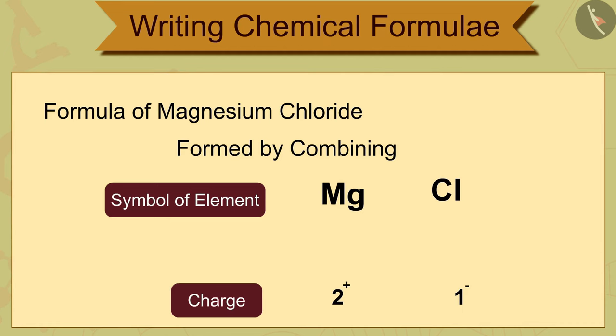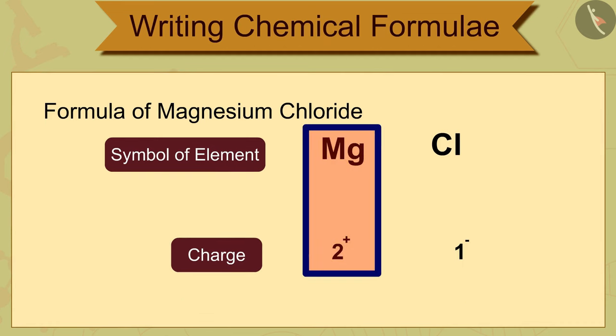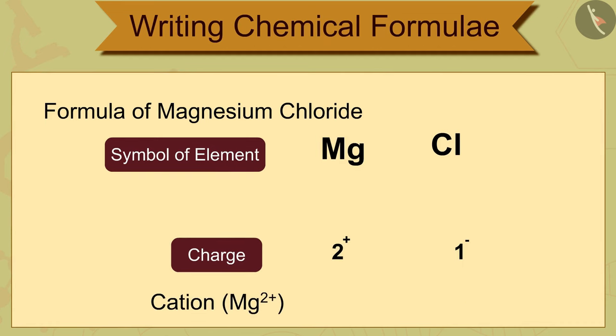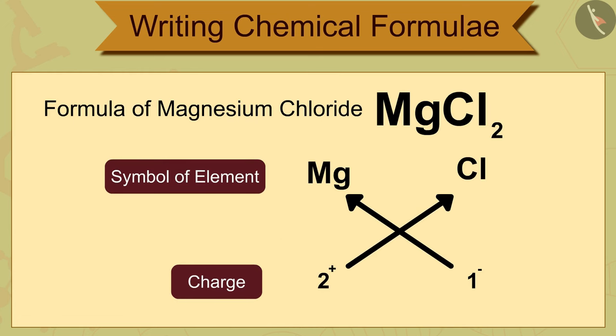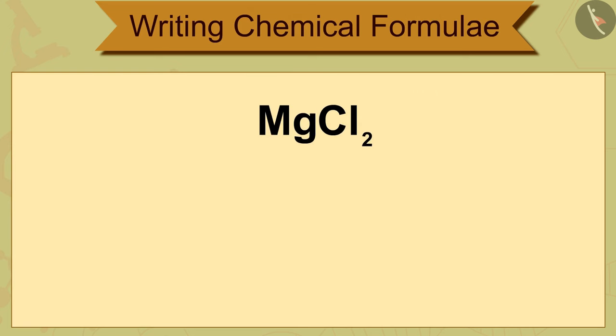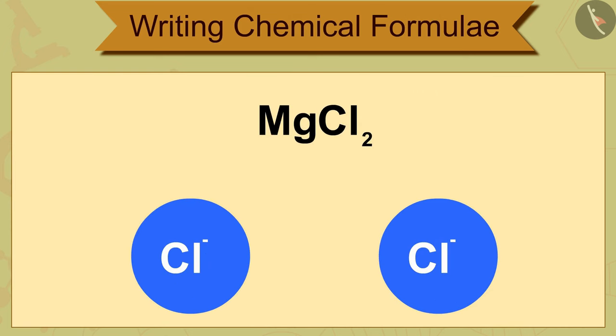To find its formulae, we write the symbol of cation Mg2+ first, followed by the symbol of anion Cl-. Then their charges are crisscrossed to get the formulae, that is MgCl2. Thus we see that in the molecule of MgCl2, magnesium chloride has 2 chloride ions Cl- for each magnesium ion Mg2+.